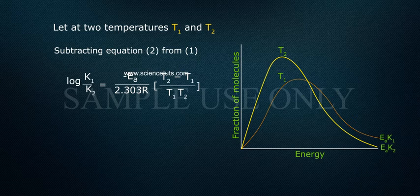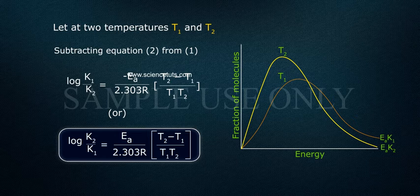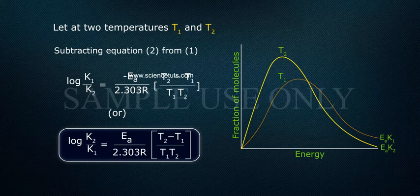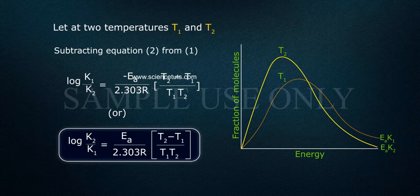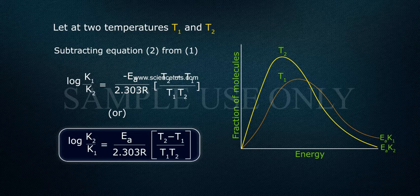Or log K2 by K1 equals Ea by 2.303 R into T2 minus T1 by T1 T2.